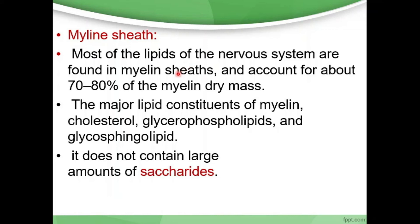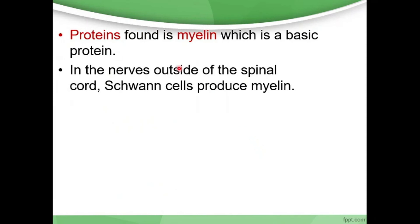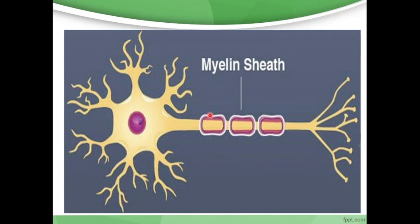Myelin is a protein present in the myelin sheath. The major lipid constituents of myelin are cholesterol, glycerophospholipids, and phospholipids. It does not contain large amounts of saccharides such as glucose, galactose, or fructose. The protein found in myelin is a basic protein in the nerves outside the spinal cord. Schwann cells produce myelin — this is very important for MCQs. Schwann cells produce the myelin.